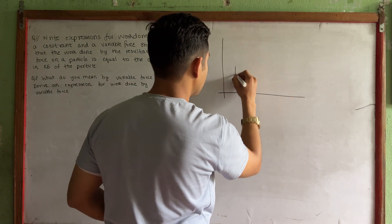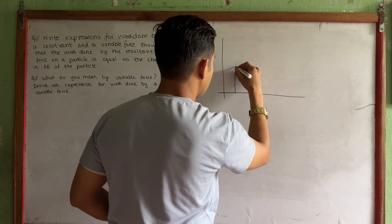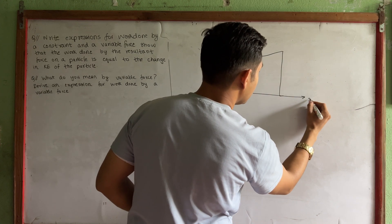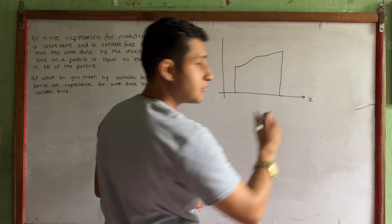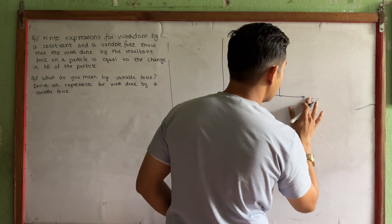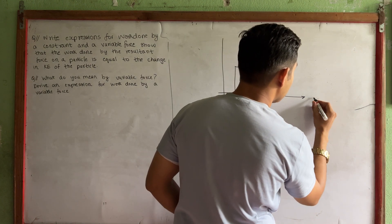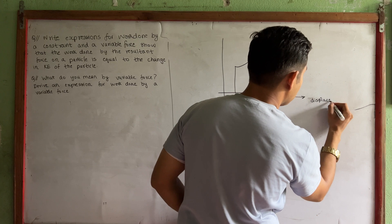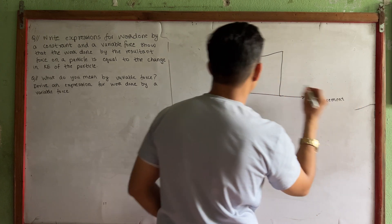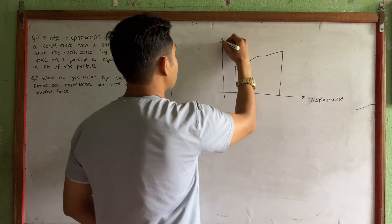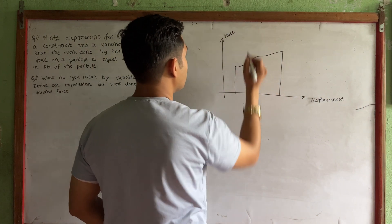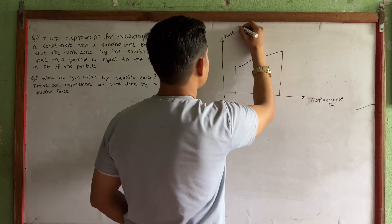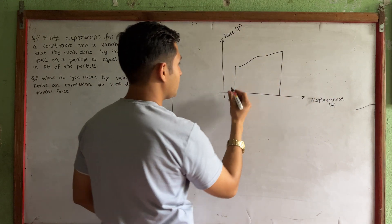To find work done by a variable force, we need to make a graph. The x-axis represents displacement and the y-axis represents force. The work done is represented by the area under the force-displacement graph, which is found by integration.